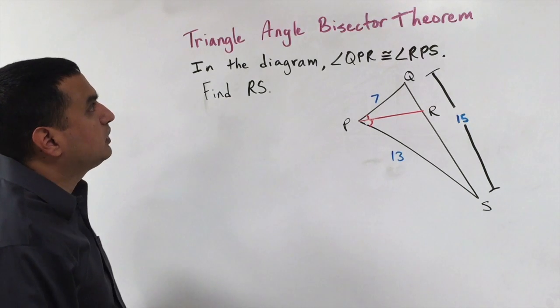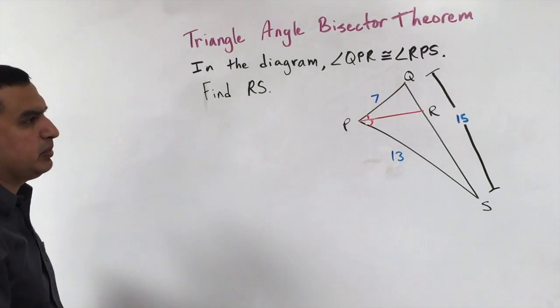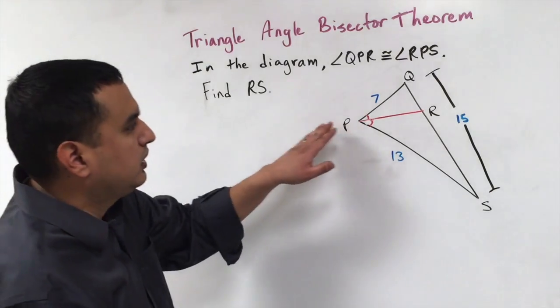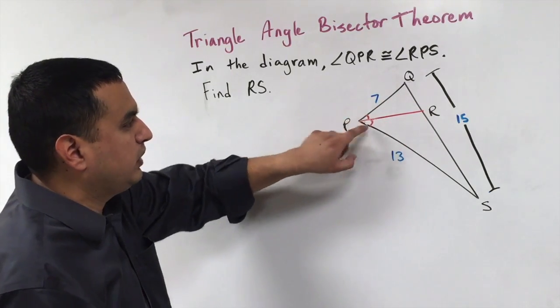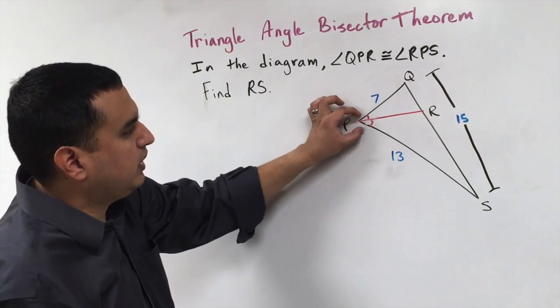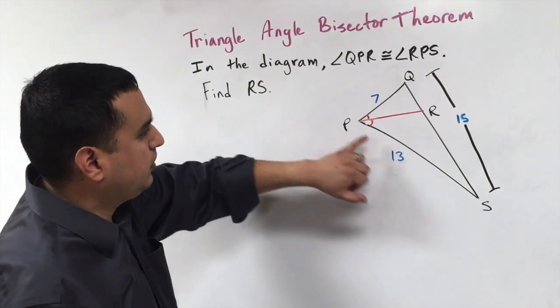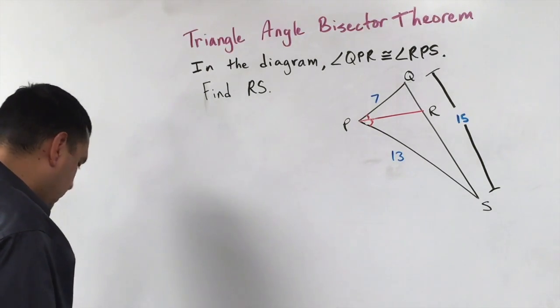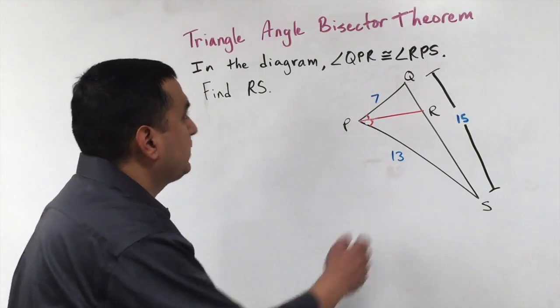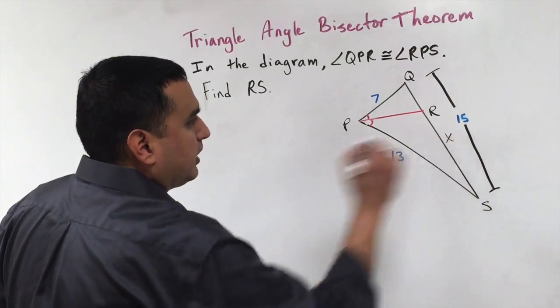Now we have what's called the triangle angle bisector theorem, where it simply says if you have an angle bisector, that kind of splits the triangle into two different pieces, but it splits it in such a way that you create these angle bisectors here, the angle QPR being congruent to this angle SPR, then you can set up a proportion to find the missing piece. In this case, we're looking for this section right here, this X right here, this segment RS.